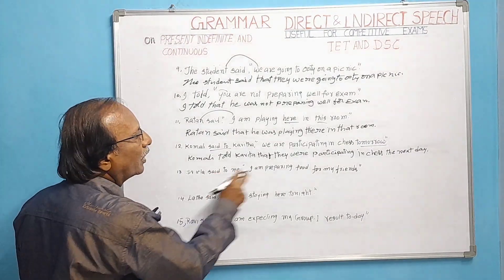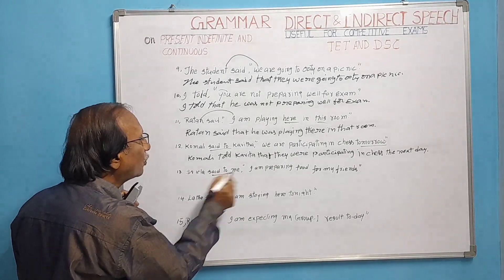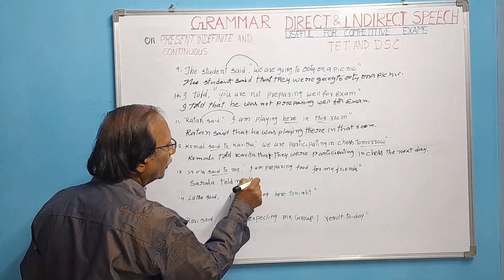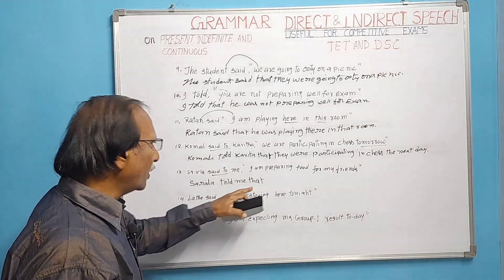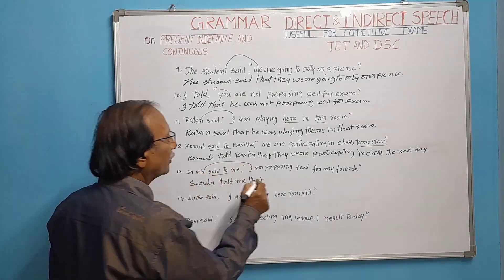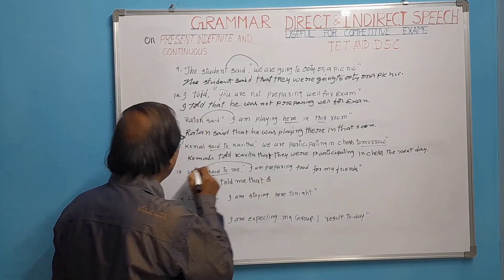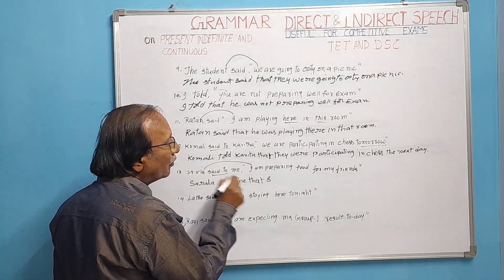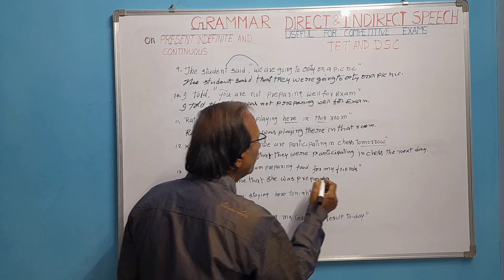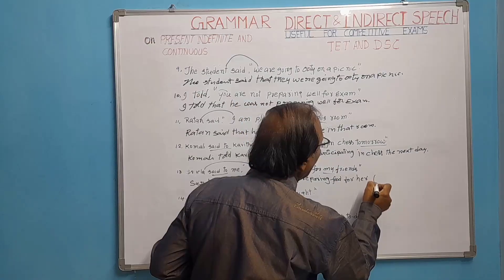Sarala said to me, 'I am preparing food for my friends.' 'Said to' becomes 'told': Sarala told me. We add 'that.' 'I' refers to Sarala, so the subject becomes third person 'she.' Present continuous 'I am preparing' changes to past continuous 'she was preparing.' 'My' refers to Sarala, so it changes to 'her.' Result: Sarala told me that she was preparing food for her friends.